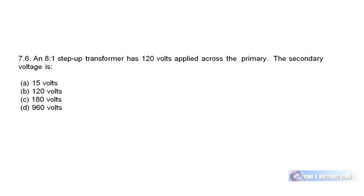Question 7.6: An 8 to 1 step-up transformer has 120 volts applied to its primary. Since it's 8 to 1 step-up, for every 1 volt on the primary there will be 8 volts on the secondary. With a primary voltage of 120 volts, the secondary voltage will be 8 times that — which is 960 volts.